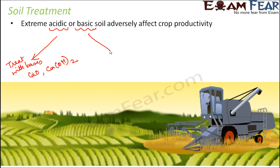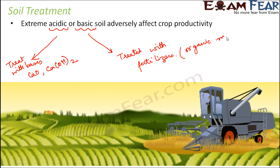Similarly, if the soil is extremely basic, it should be treated with fertilizers or organic matter. These fertilizers and organic matter release acids into the soil, which will neutralize the effect of the bases, reducing the basic nature of the soil. So depending upon the need of the soil, respective fertilizers, organic matter, or bases are added. Even for the growth and development of plants, acids and bases play a very important role in the soil, which is one of the most important factors.